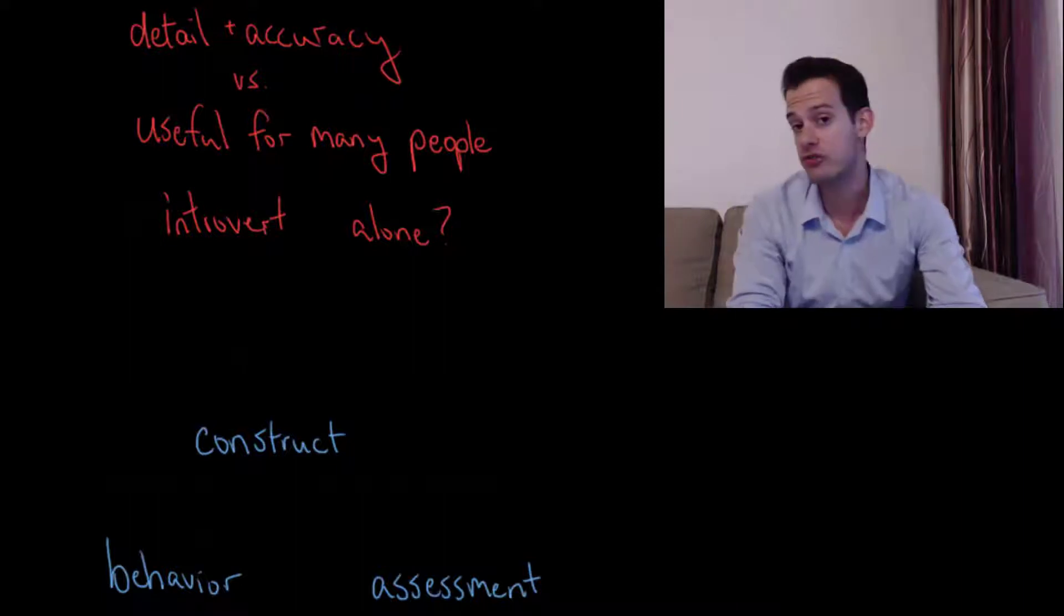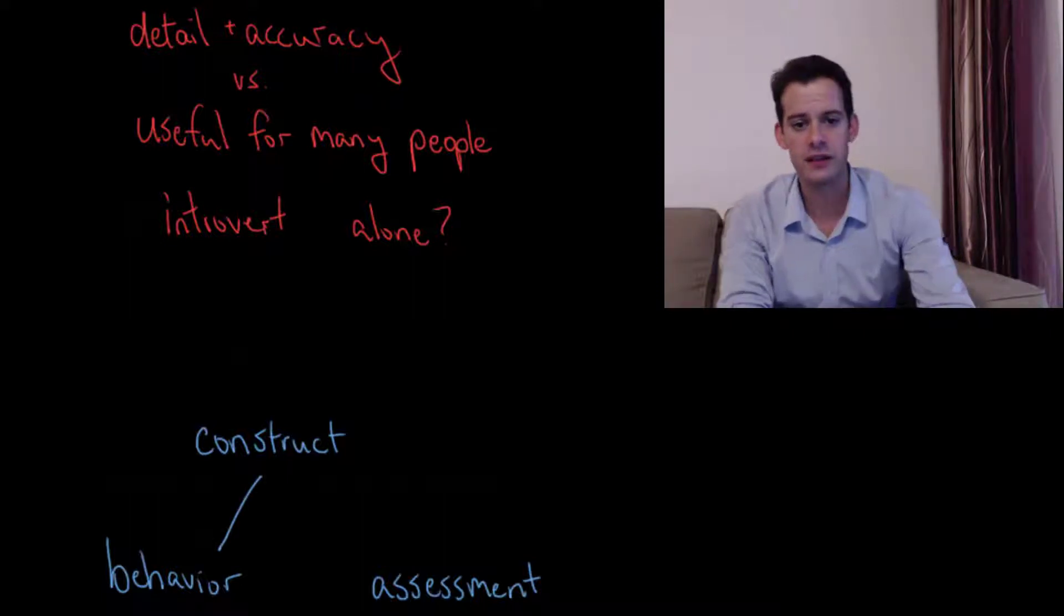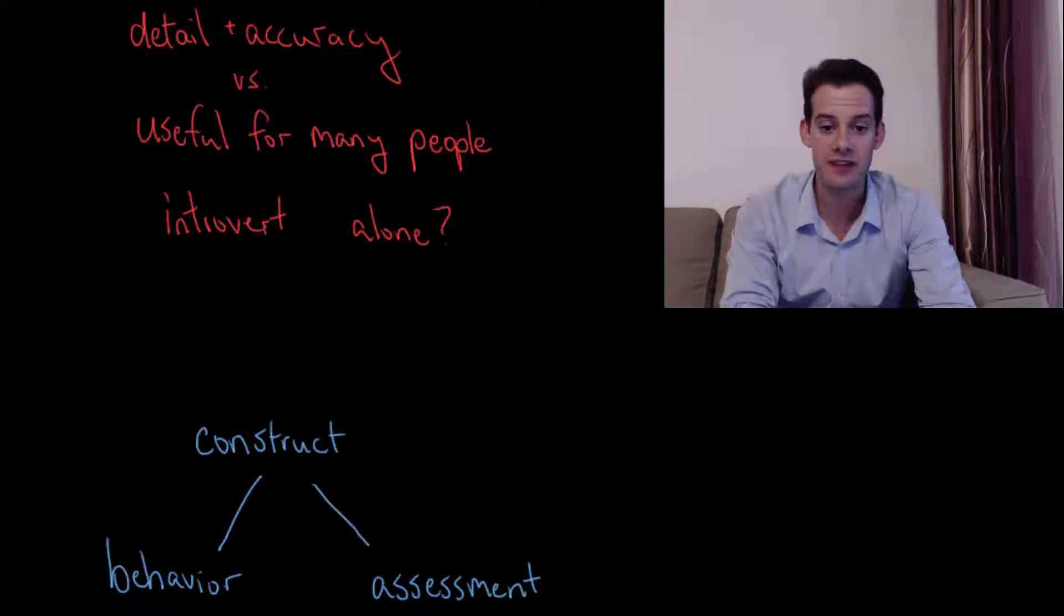And then we look for relationships between these three parts. And so in the case of a personality trait, we might have some construct that we say, I think openness to experience is a trait that exists. And it's going to be connected to particular behaviors like trying new things or exposing yourself to new ideas. So I have this connection here between this hypothetical property or trait and actual behavior. And then I have some assessment that also is linked to the general hypothetical property here.